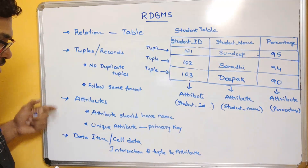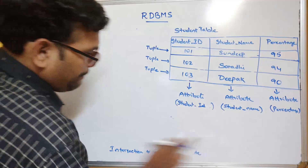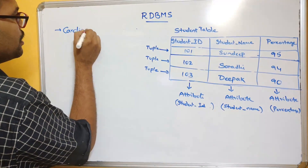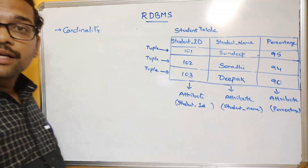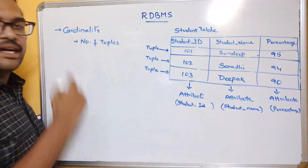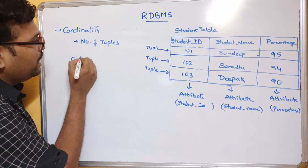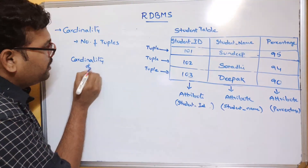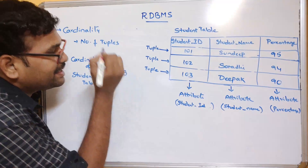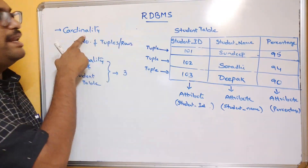So to recap the terminologies so far: relation, tuples, attributes, and data item. The next terminology is cardinality. Cardinality means the number of tuples in a table. In this example, we have 1, 2, and 3 tuples, so the cardinality of the student table is 3 — because there are 3 rows.